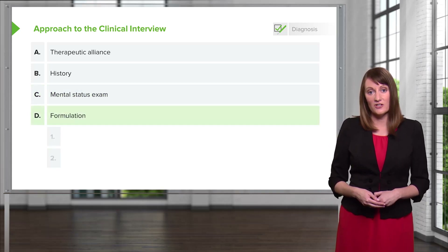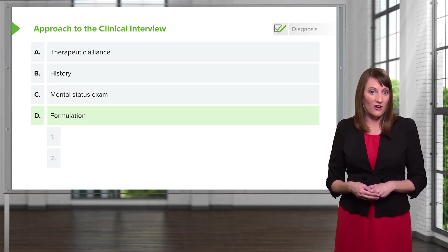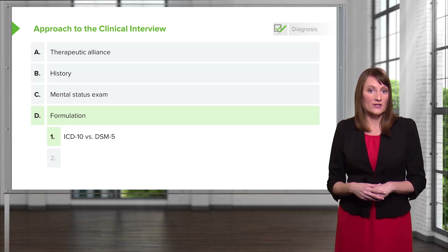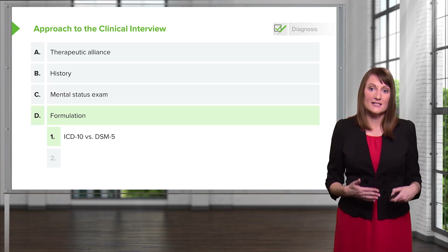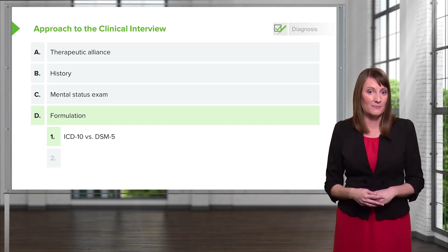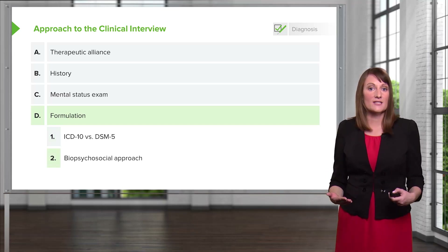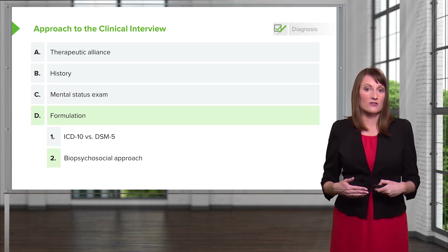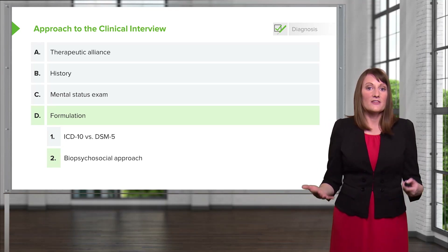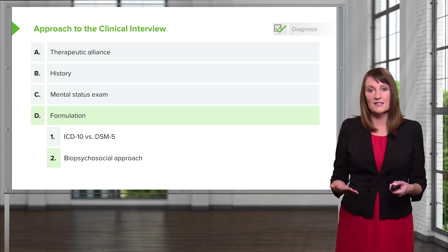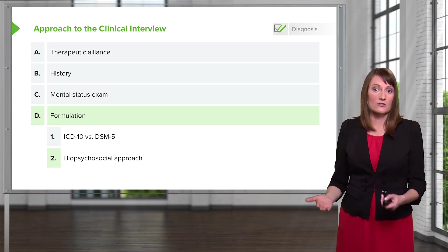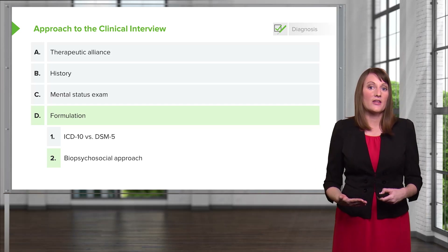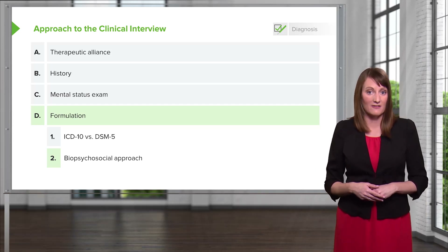When you formulate a patient, there are a couple of things to consider. First, depending on your setting, you may be referring to diagnostic criteria according to an ICD-10 or a DSM-5 coding system. It's also important to take a biopsychosocial approach when formulating the patient's illness, treatment, and future trajectory. The biopsychosocial approach includes considering biological, psychological, and social predisposing, precipitating, and perpetuating factors that are interfering with one's ability to achieve the best mental health.